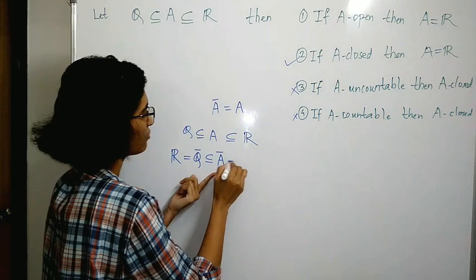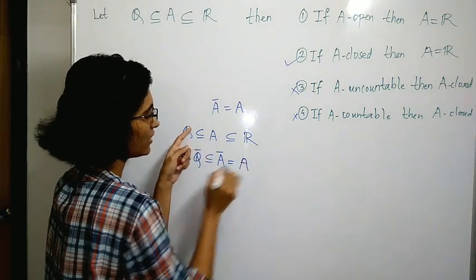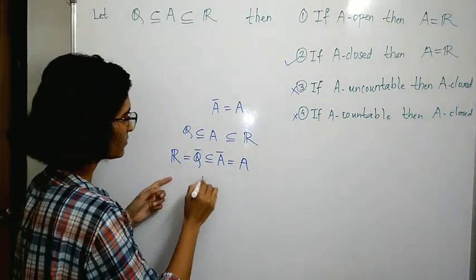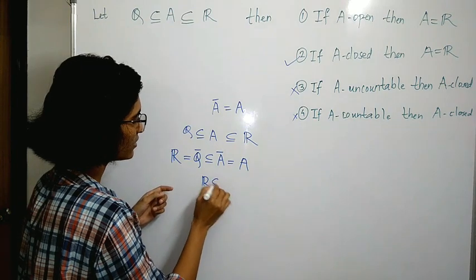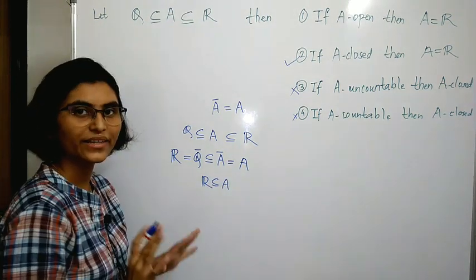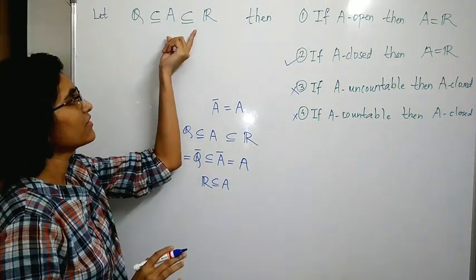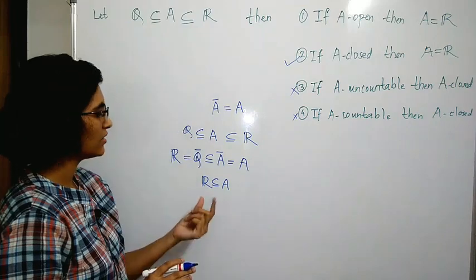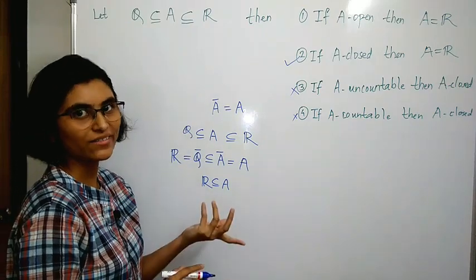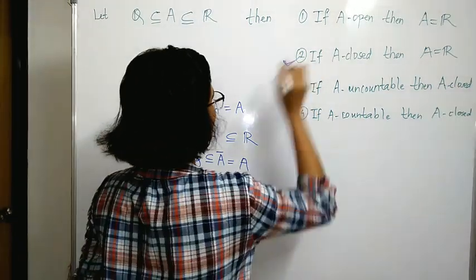Since A closure equals A, we have ℝ is a subset of A. Also A is a subset of ℝ. Therefore A equals ℝ. This completes the proof that the second option is correct.